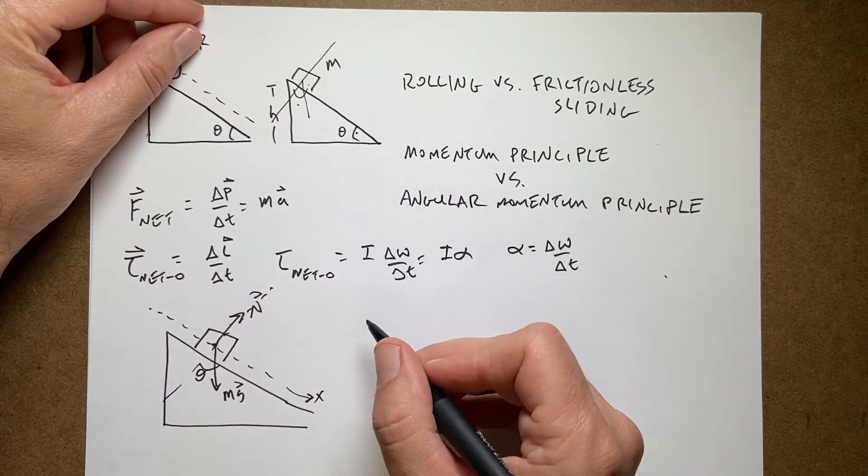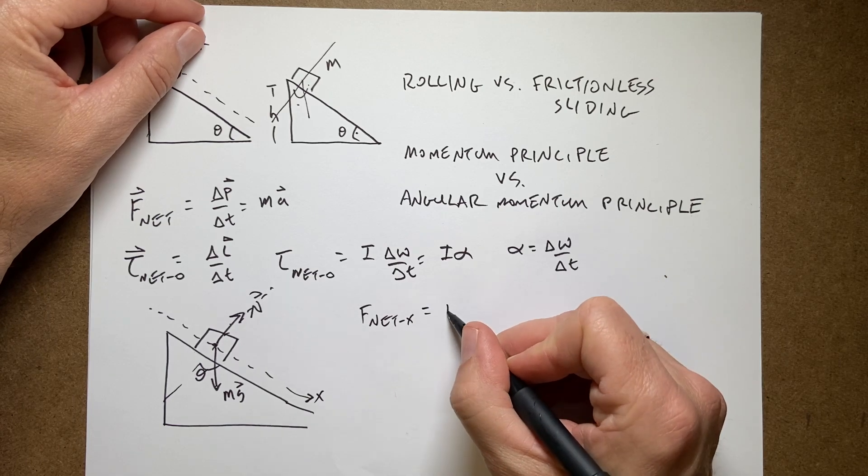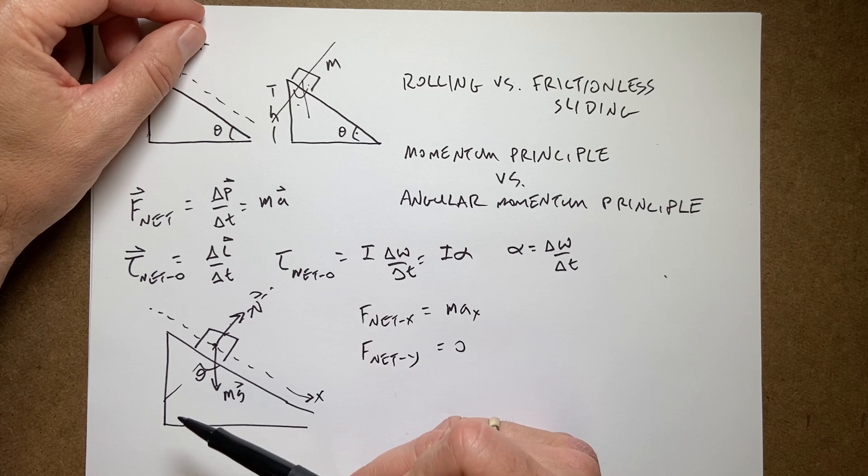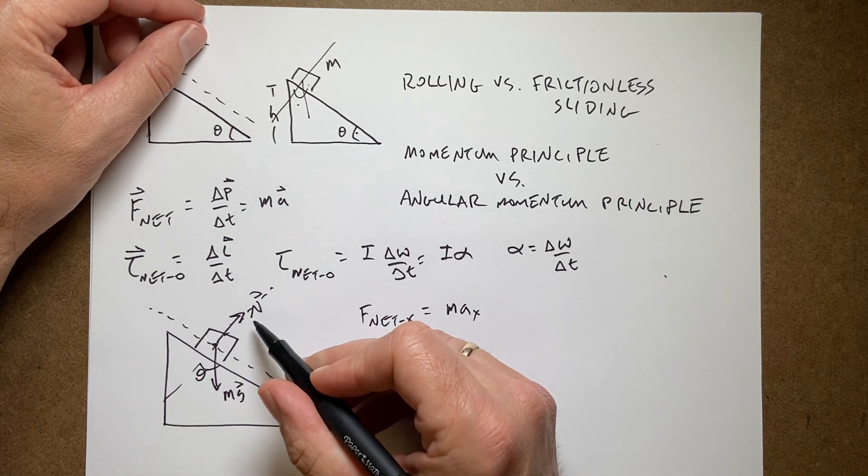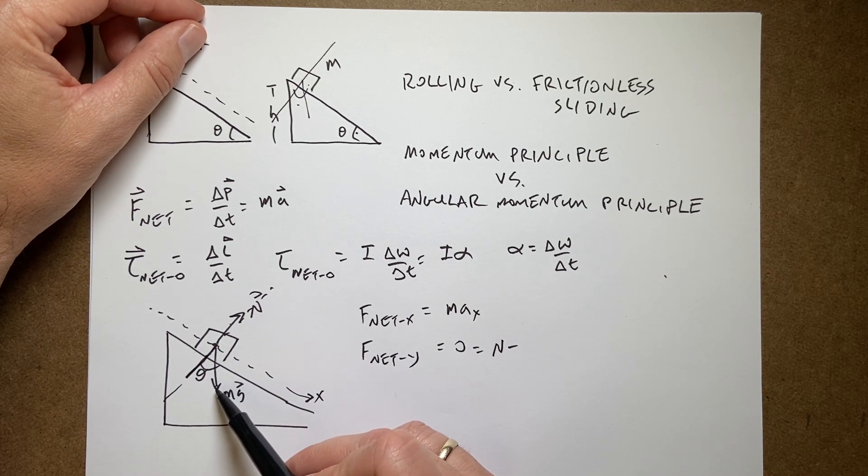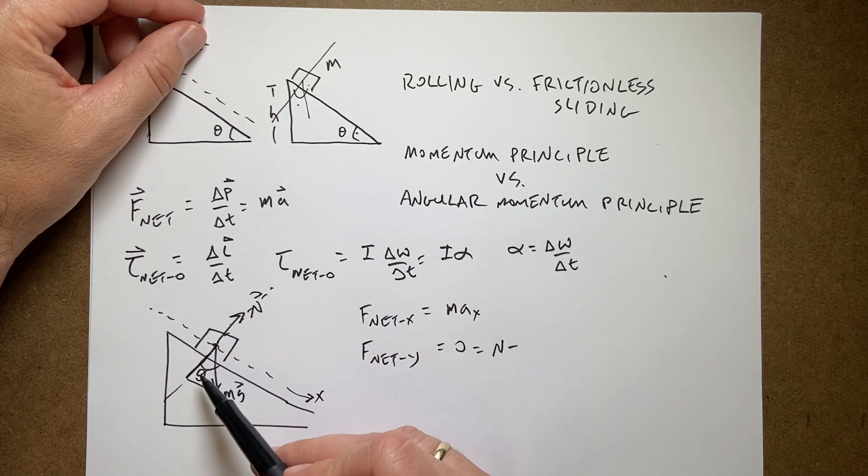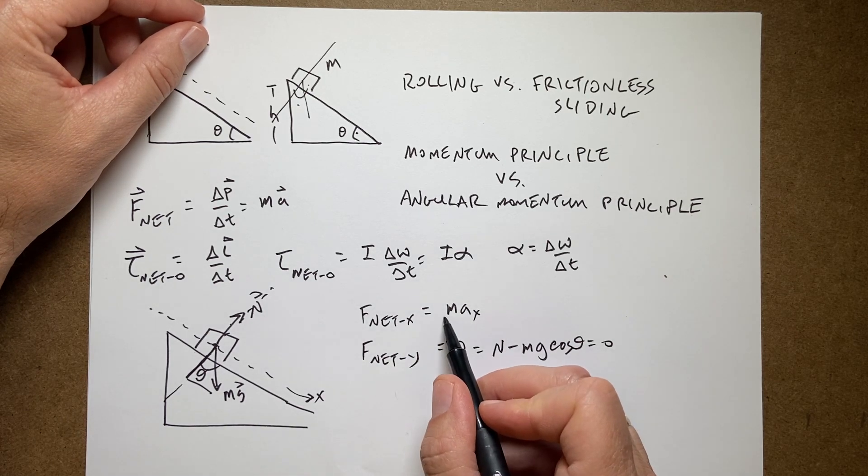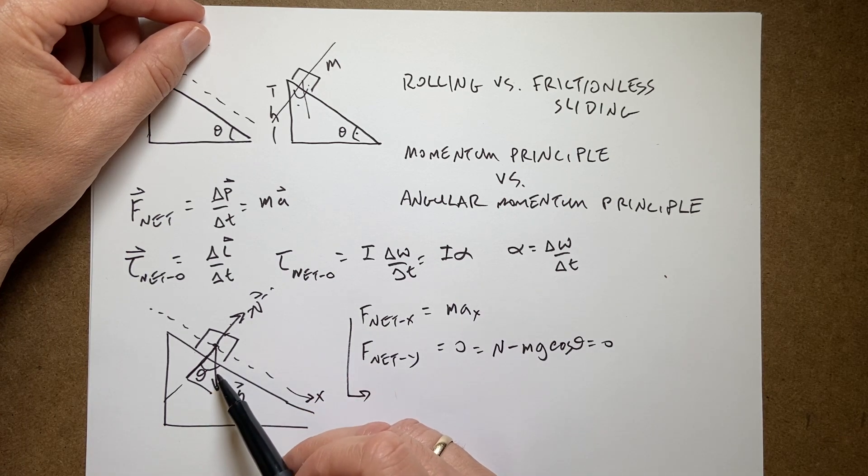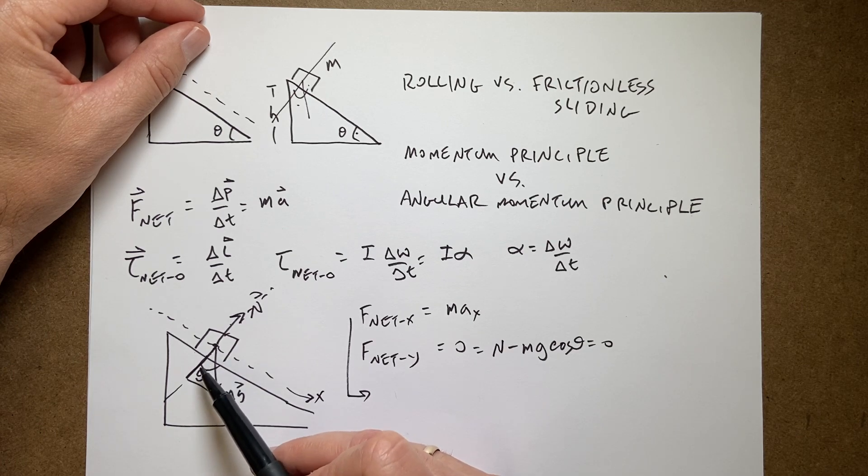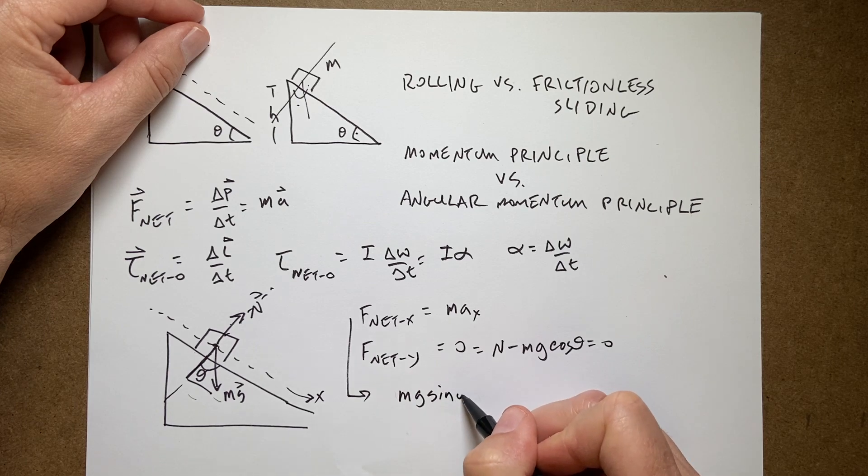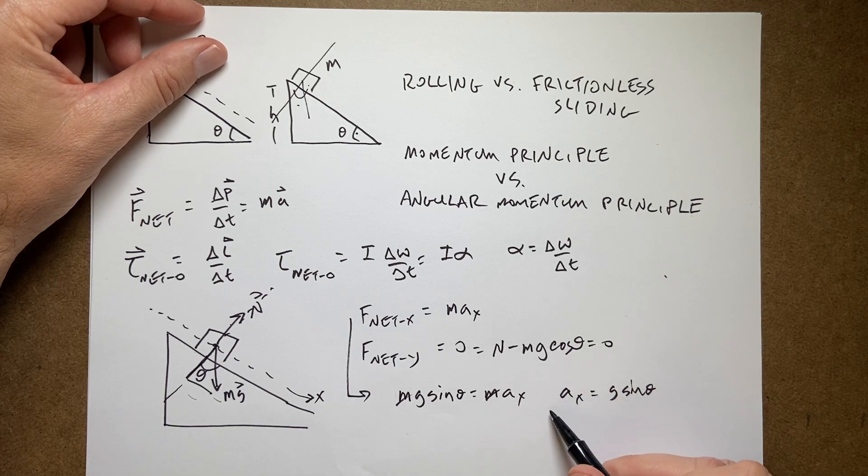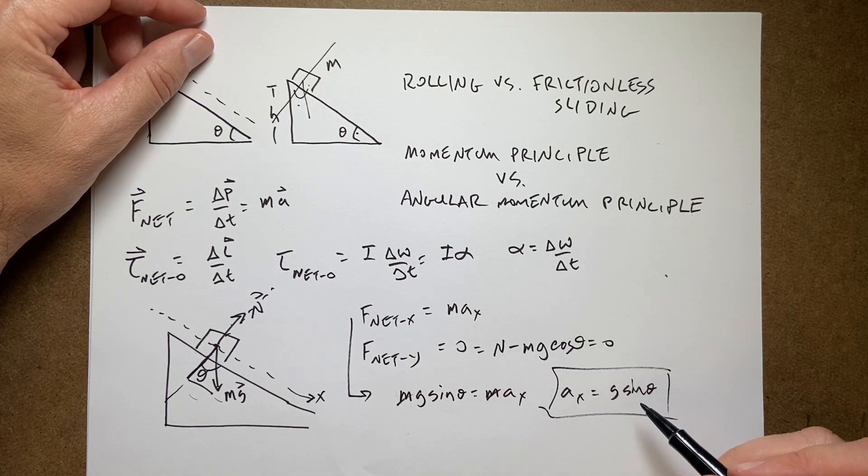So I can write the equation as F net x equals m ax, F net y equals zero. This is zero because the acceleration in this direction is zero. So the forces have to add up to zero. So this means that I have the normal force minus the component in the y direction of the gravitational force. So this is mg cosine theta equals zero. And I could solve for n right there, but it turns out I don't need it. If I look at the x direction, I have only one force acting in the x direction, and that's this component of the gravitational force. So I get mg sine theta equals m ax. So now I can divide both sides by m, and I get ax equals g sine theta. That's what I got before when I did the work energy roundabout way.